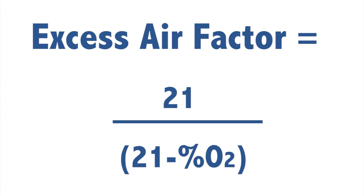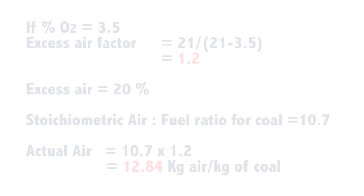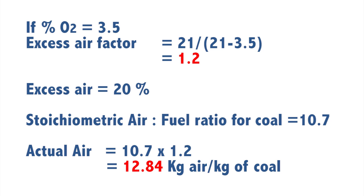Now that excess air could be 15%, it could be 20%, it could be 25% — that depends on the kind of fuel and the kind of boiler. The excess air and the quantity of oxygen present in the flue gases have a direct correlation. There is a formula that links both of them together, and the formula is: excess air = 21 / (21 − O₂). An excess air factor of 1.2 indicates that 20% excess air is present. Therefore, knowing the oxygen percentage in the flue gas is the first stage.